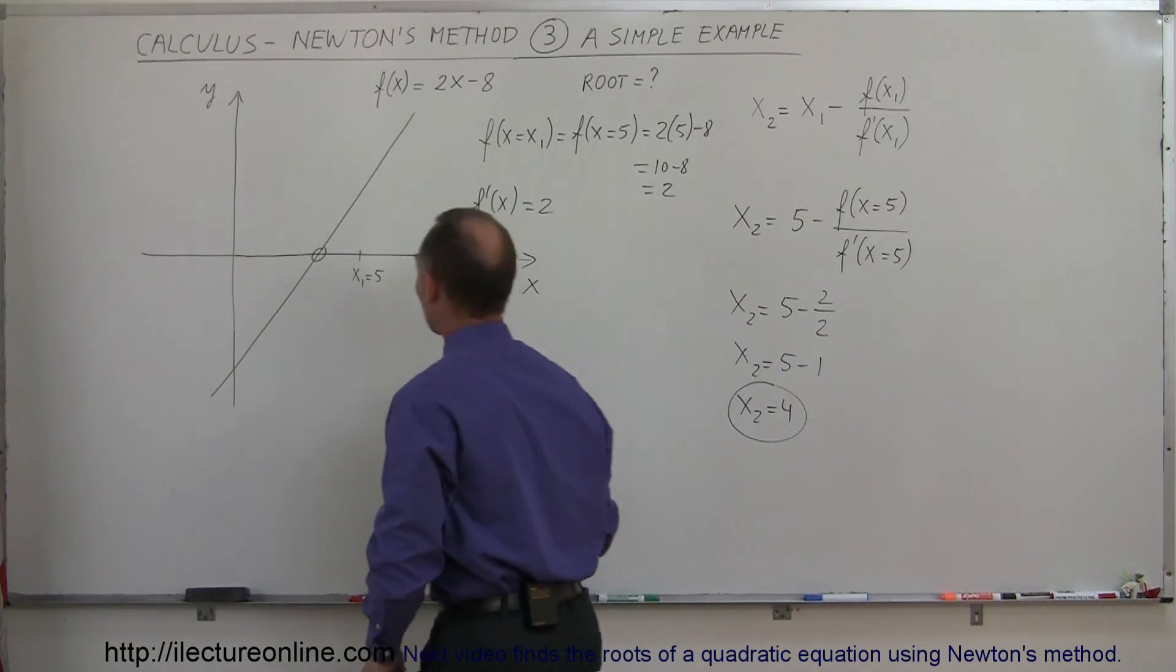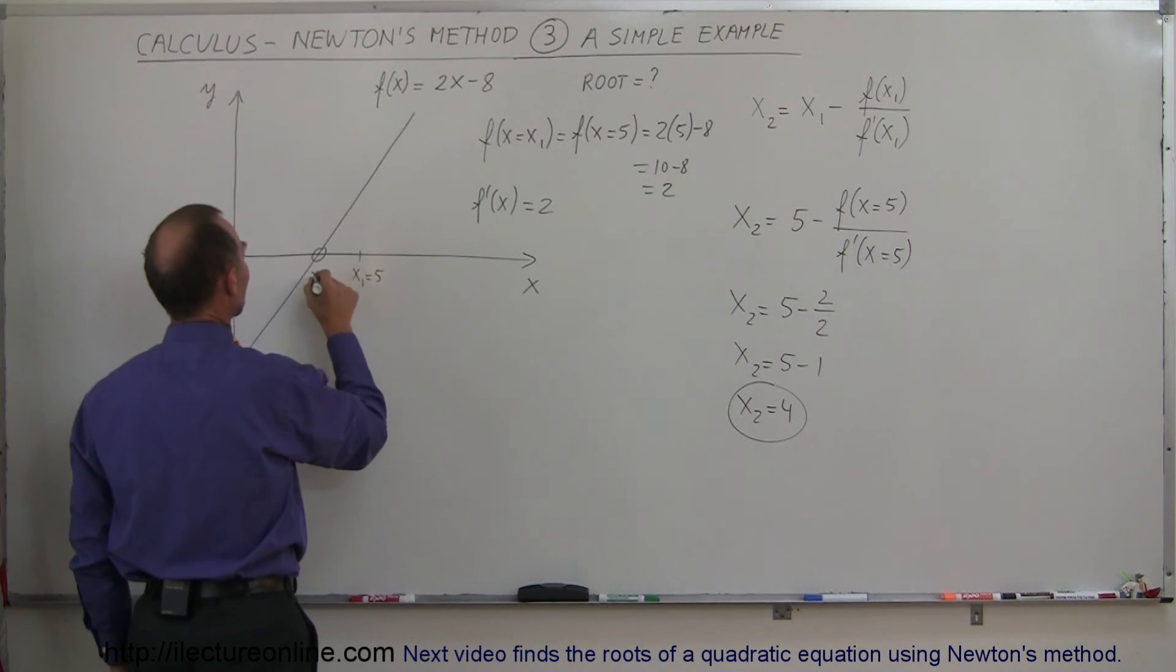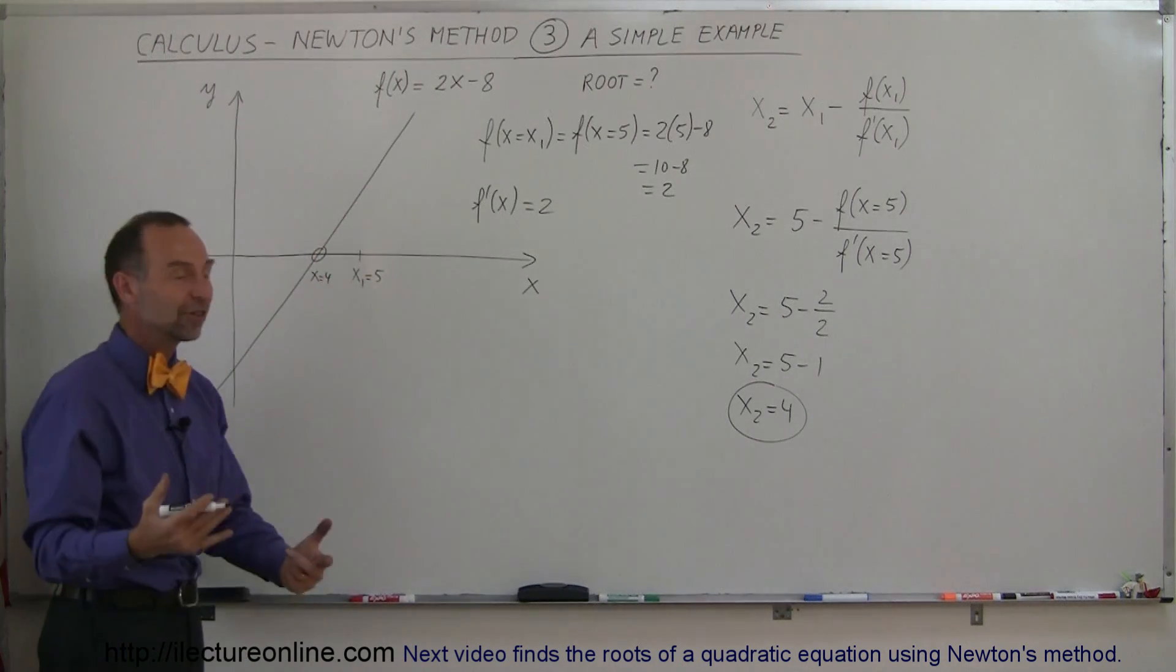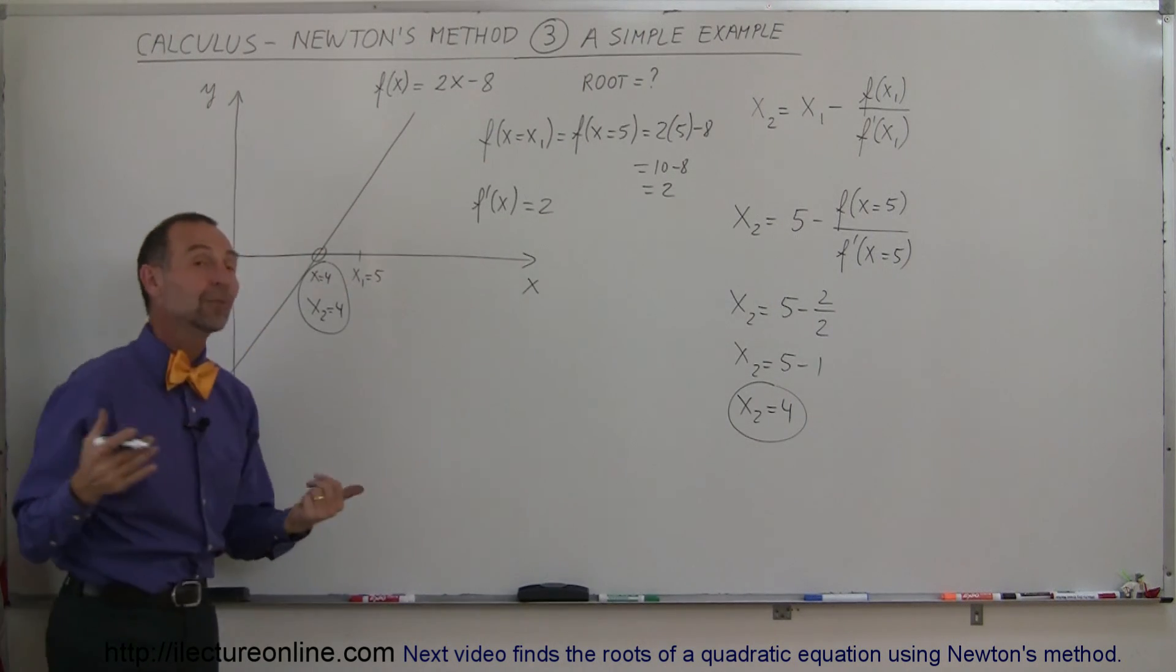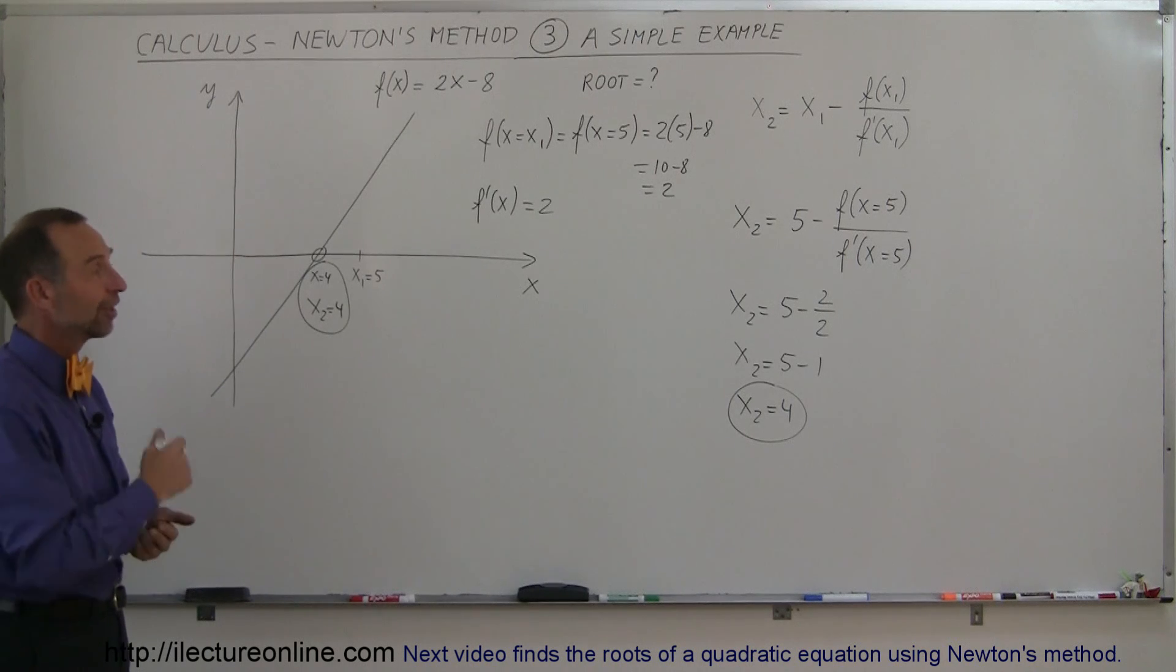And sure enough, we know that this happens when x is equal to 4, so right away with my first attempt, I found my second point, x₂ is equal to 4, which is equal to the actual root of the function, and we see Newton's method works. So that's a very simplistic example, but you can at least see that that's simply how you apply it.